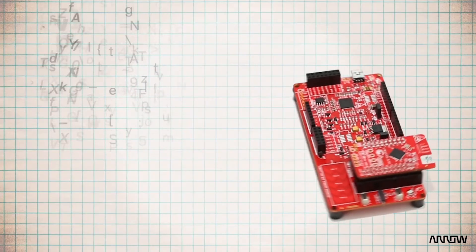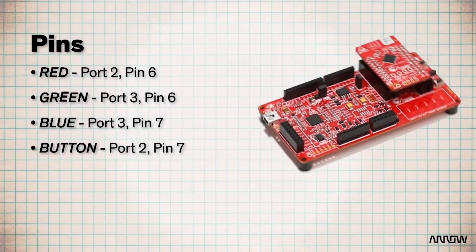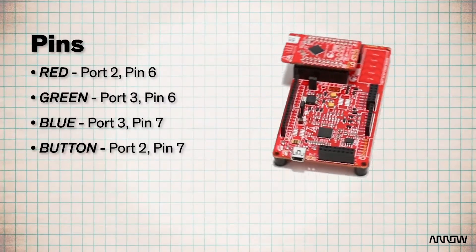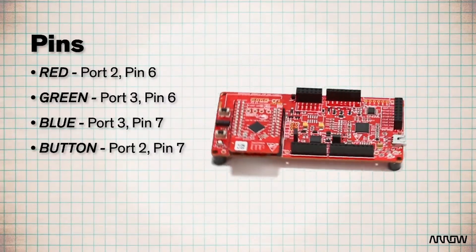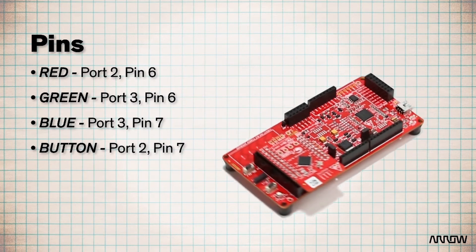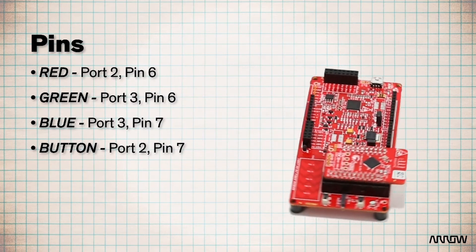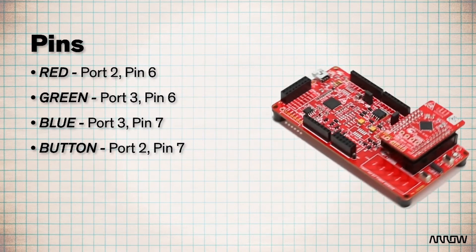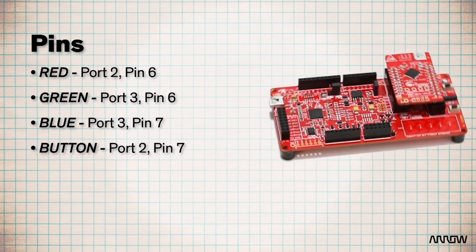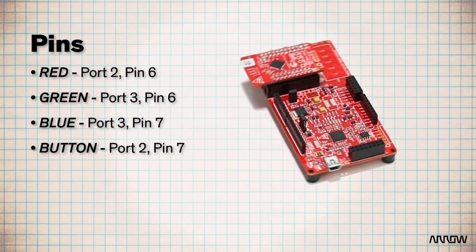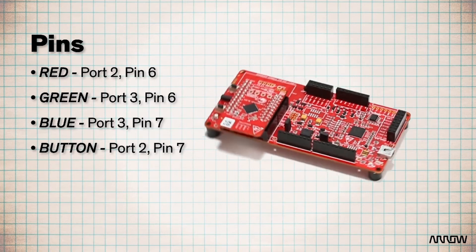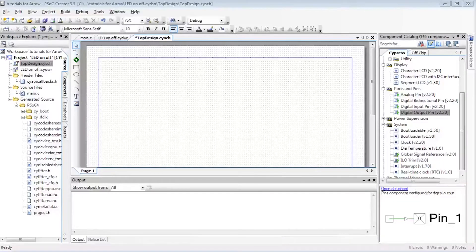The eval board comes with an RGB LED connected to the following pins: Red on port 2, pin 6; green on port 3, pin 6; and blue on port 3, pin 7. There is also a push button on port 2, pin 7.